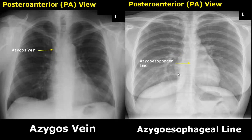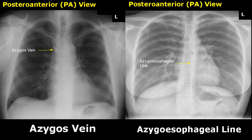This small knob is the azygous vein. It is usually on the opposite side of the aortic knob. The azygoesophageal line is found by the interface of the right lower lobe, the azygous vein, and the esophagus. It is also called the azygoesophageal recess.